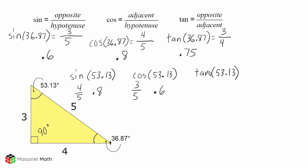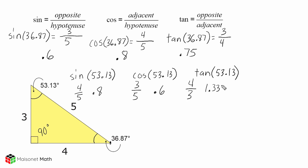The tangent of an angle is the length of the opposite side compared to the length of our adjacent side. The length of the side opposite this angle is 4, and the length of our adjacent side relative to this angle is 3. So if we convert this to a decimal, 4 thirds is 1 and 1 third, so it would be approximately 1.333 repeating.